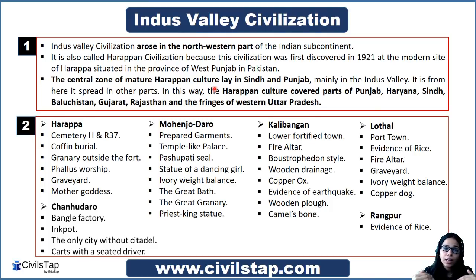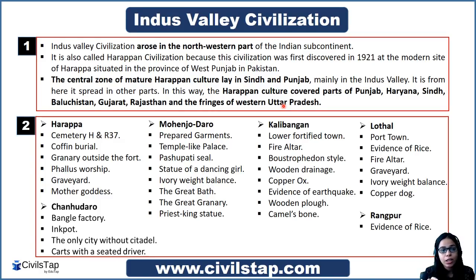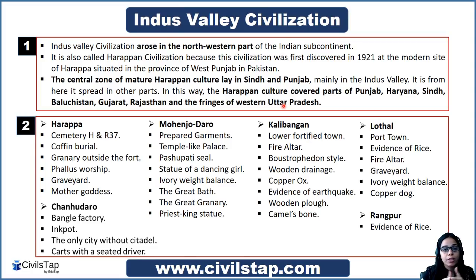Harappan culture covered parts of Punjab, Haryana, Sindh, Baluchistan, Gujarat, Rajasthan, and even the fringes of Western Uttar Pradesh. So you can see it is a very large civilization that covered a lot of area. You should keep these region names in mind, so that if you are asked whether a particular region was part of Indus Valley Civilization or not, you can connect it with this list.